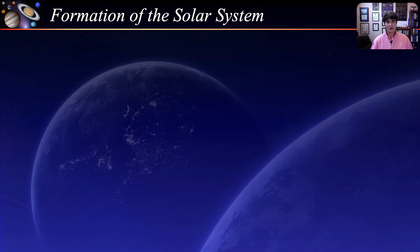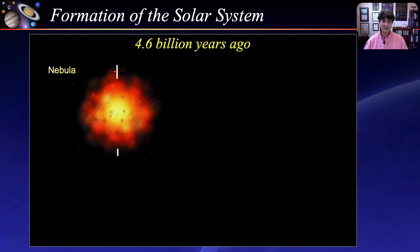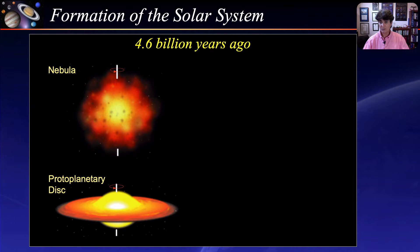The solar system formed 4.6 billion years ago as a massive cloud of interstellar gas and dust called a nebula, from the Latin word for cloud. Due to its own self-gravity, or the shockwave from a neighboring supernova, the cloud started to gravitationally collapse while slowly rotating. As the cloud continued to collapse, its rate of rotation or spin rate increased. In physics terms, this is called the law of conservation of angular momentum.